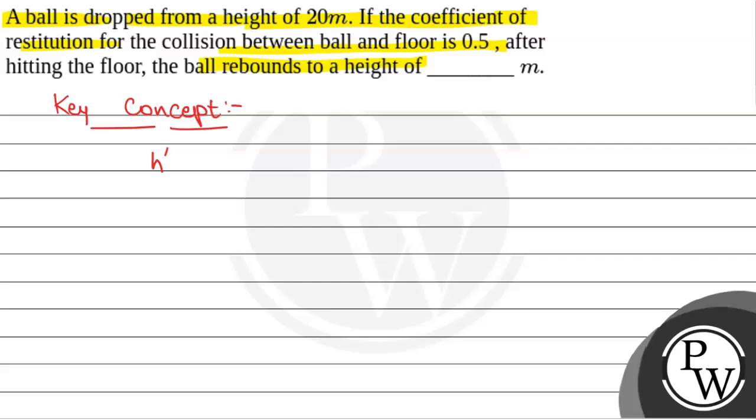H' is equal to E squared times H, where H' is the height the ball rebounds. The height to which the ball rebounds after hitting the floor is H'.